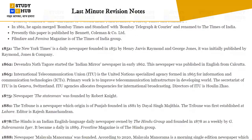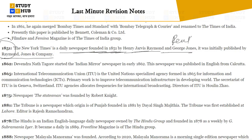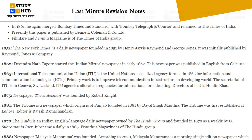In 1851, the New York Times was founded as a daily newspaper by Henry Jarvis Raymond and George Jones, initially published by the Raymond and Jones Company. Also important in 1851 is Reuters news agency, which was also established in that same year.